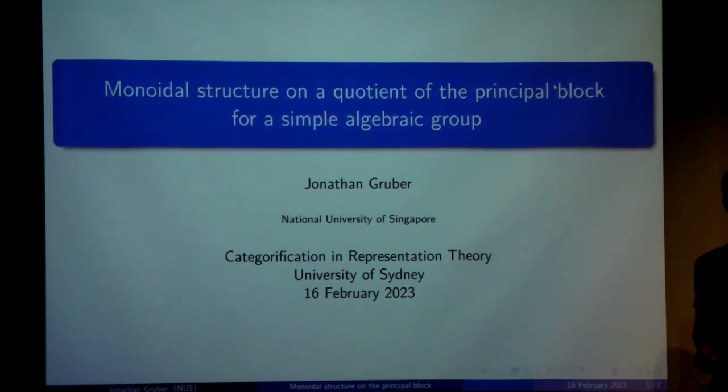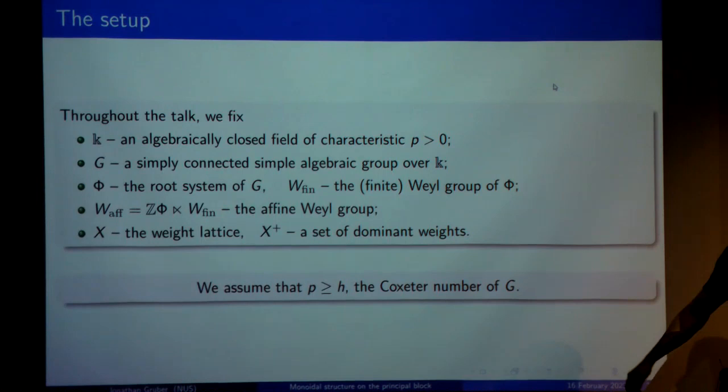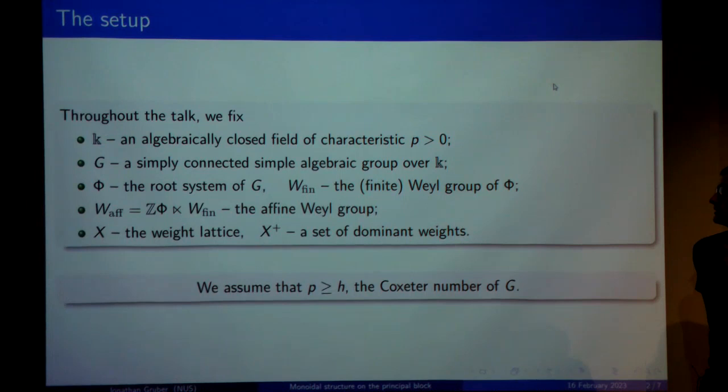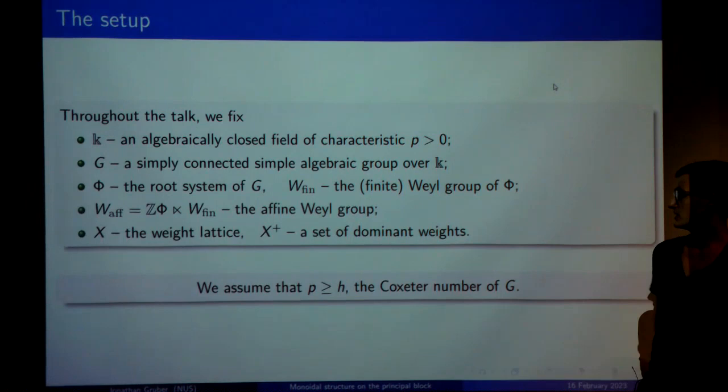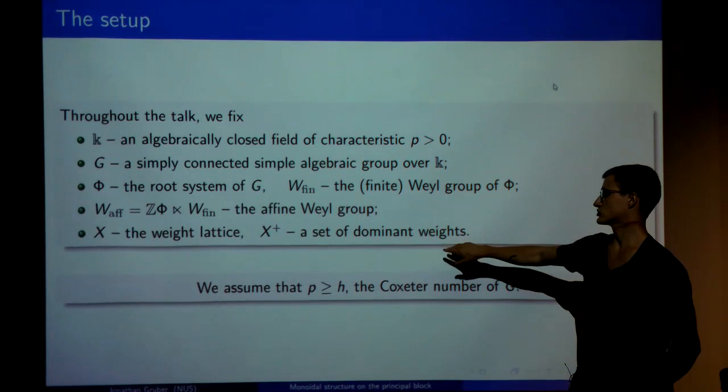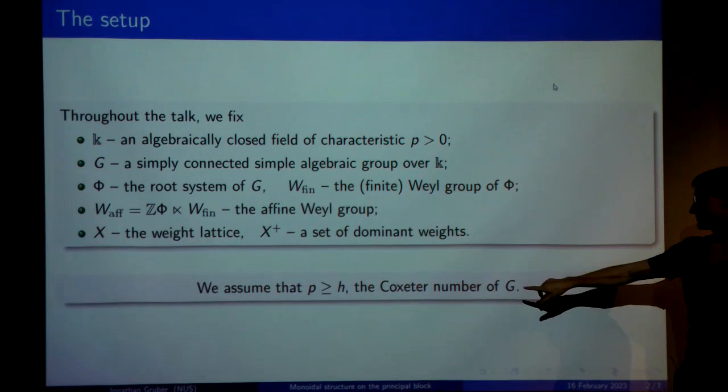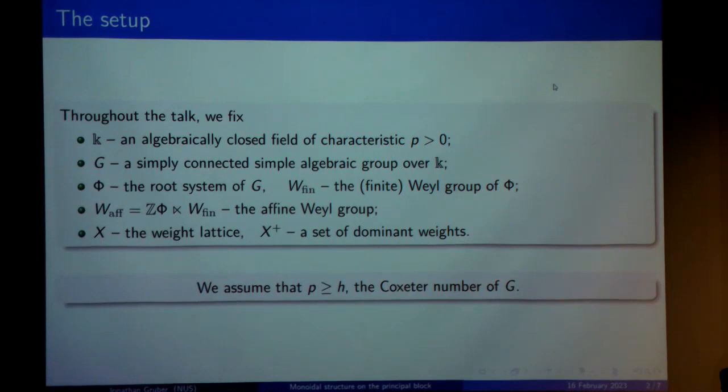The setup is going to be that we fix an algebraically closed field of positive characteristic and a simply connected simple algebraic group over the field, which comes with a root system and a finite Weyl group, and then we form the affine Weyl group, which is a semidirect product of the finite Weyl group by the root lattice. We also fix a weight lattice for the group and make a fixed choice of dominant weights. Throughout, we're also going to assume that the prime is bigger than the Coxeter number, and then we have some nice properties of this category of rational representations of the algebraic group.